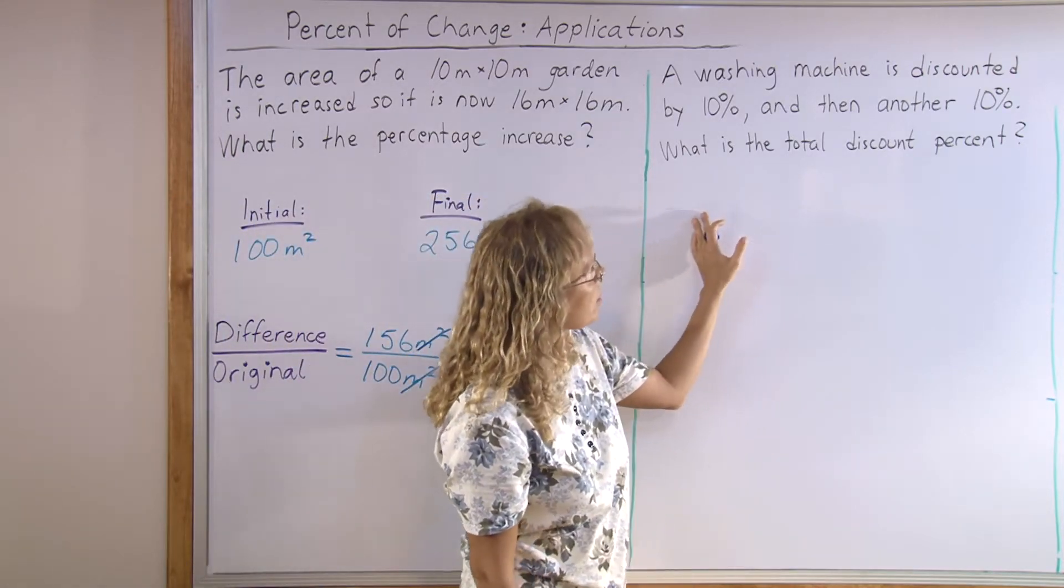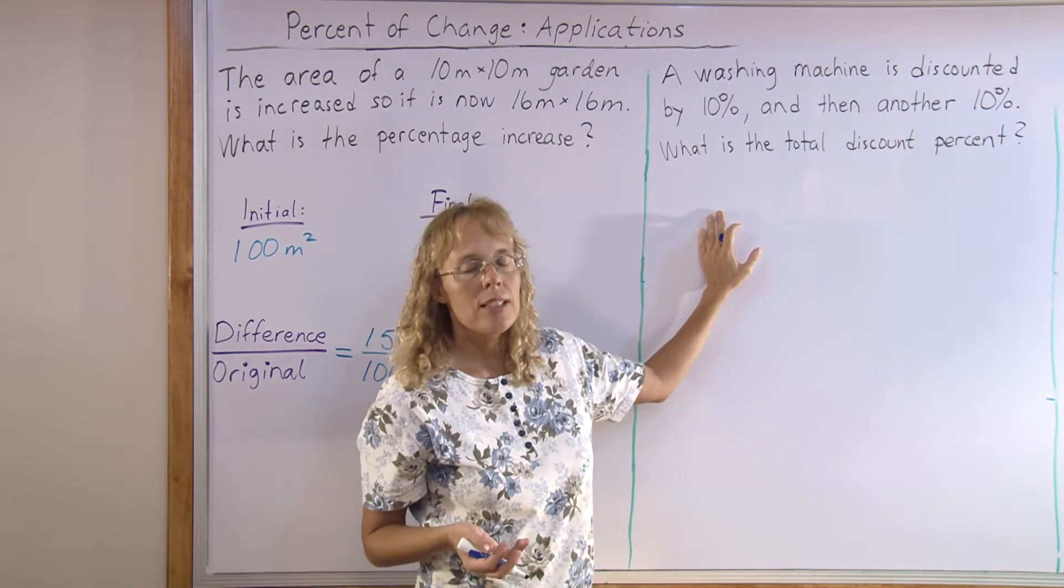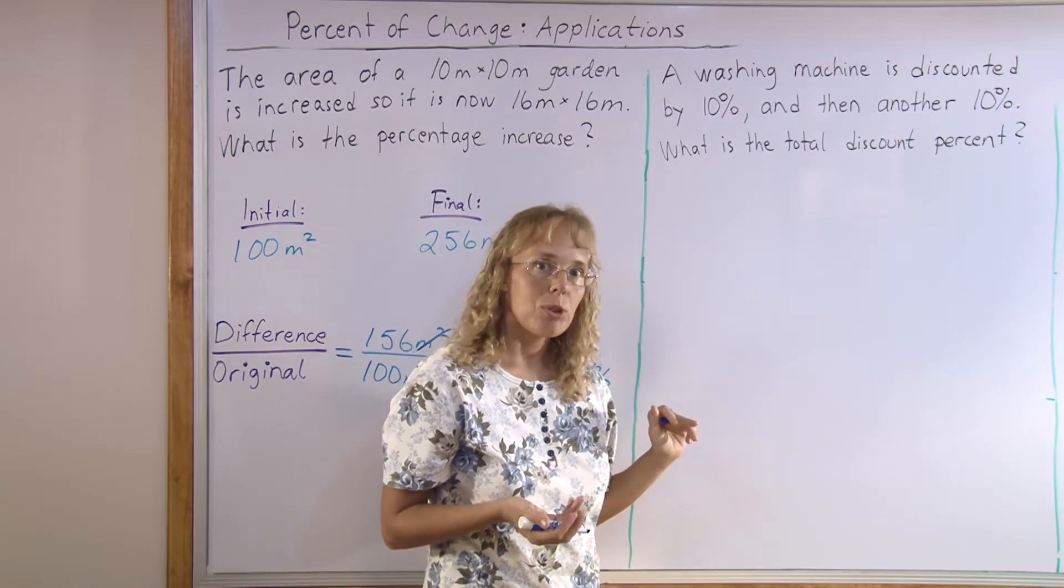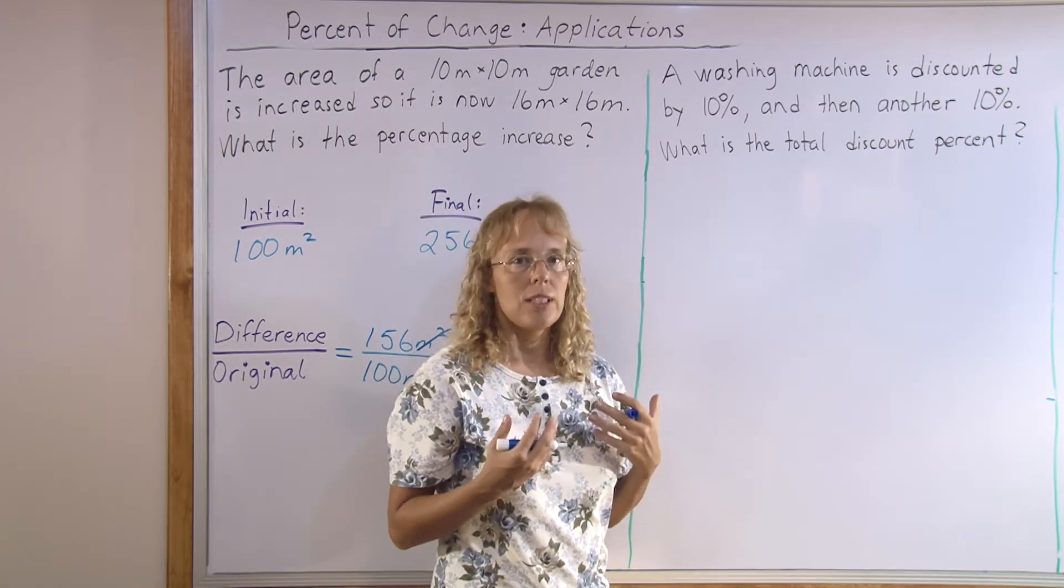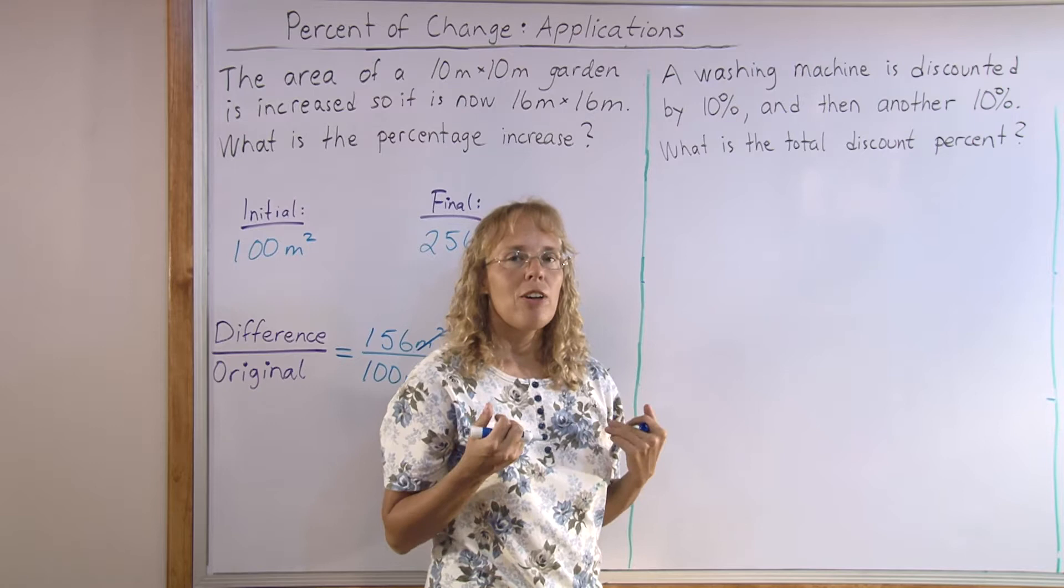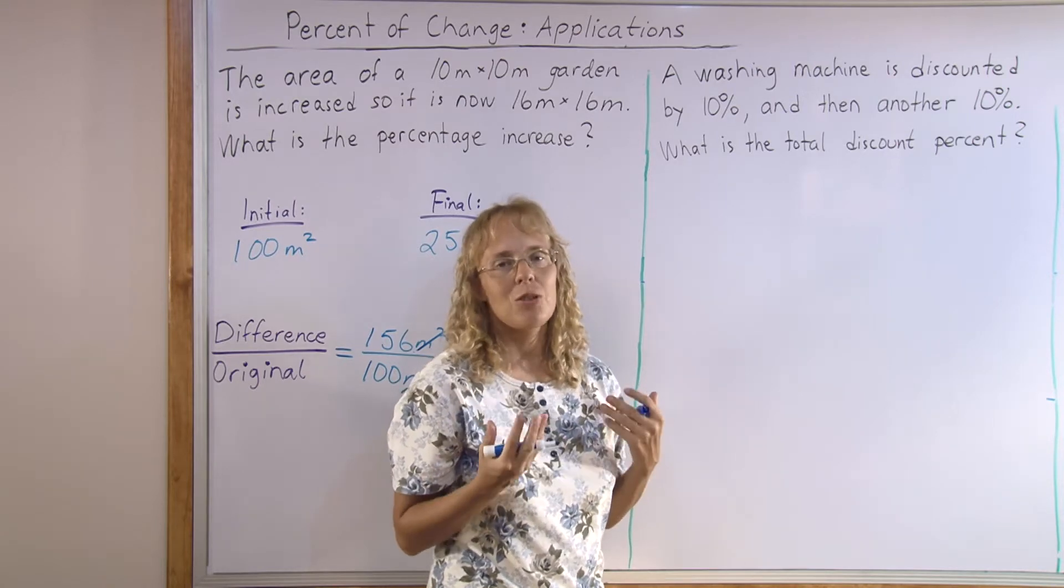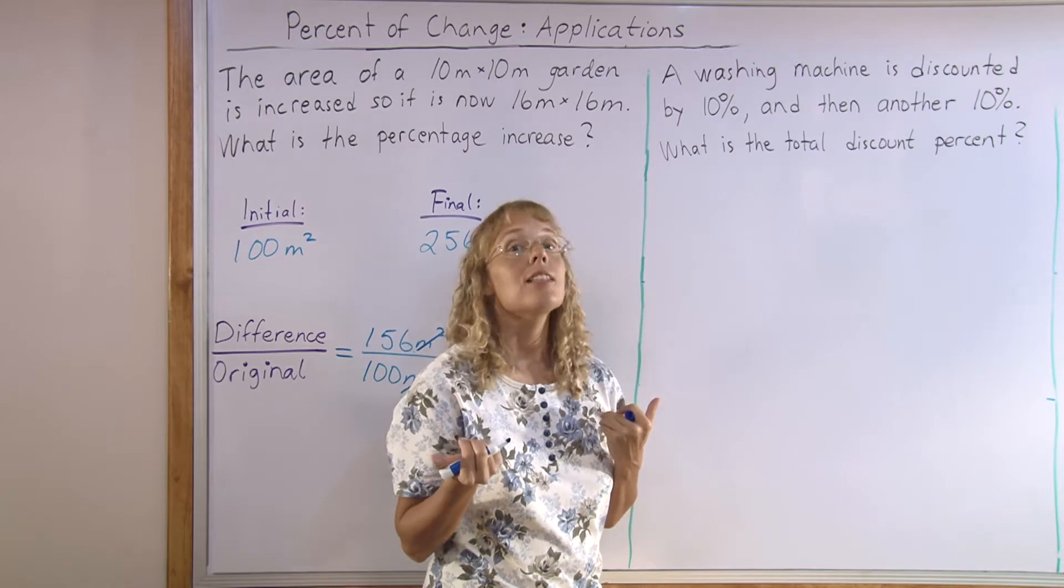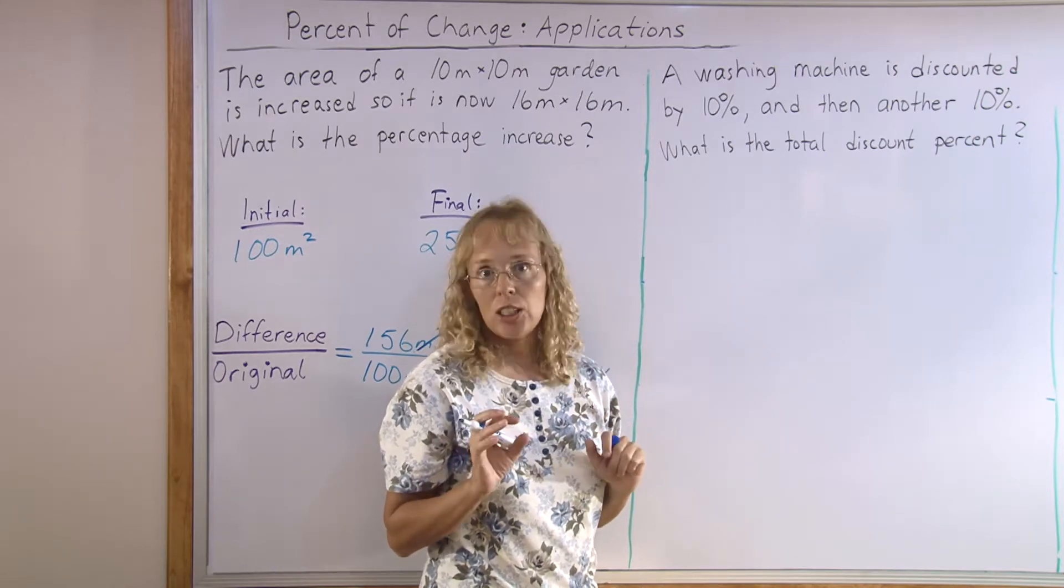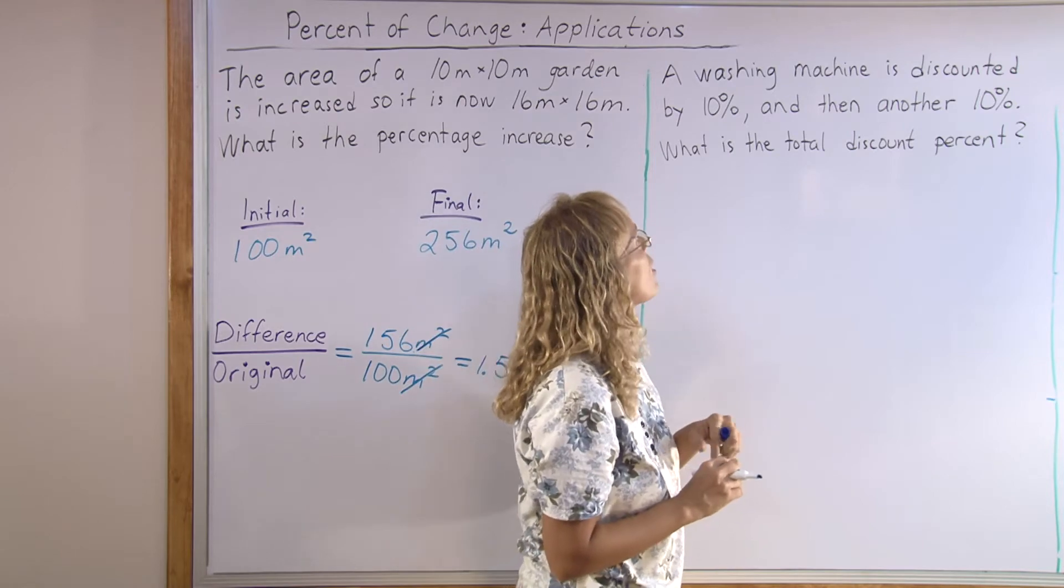Now, a washing machine is discounted by 10% and then later by another 10%. And how much is the total discount percent? Now, again, you might be fooled. Our students might easily be fooled to think that the total discount is 20% of the original price. But that is not so. Let's look at it and see how it goes.